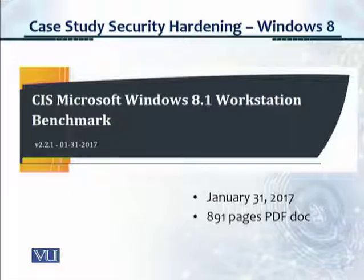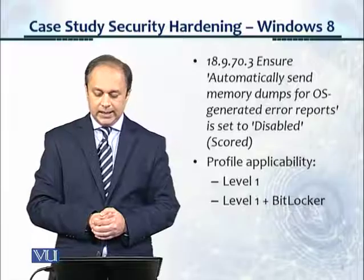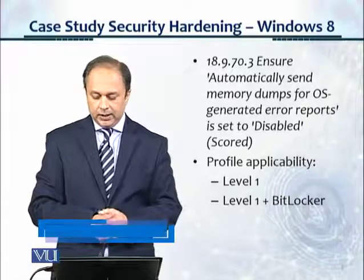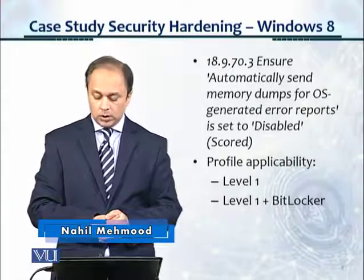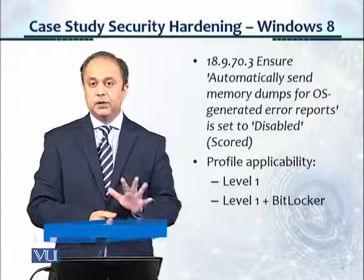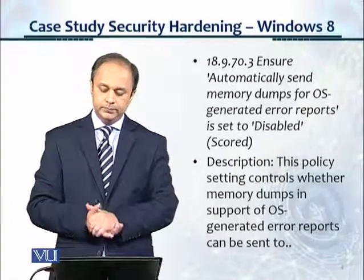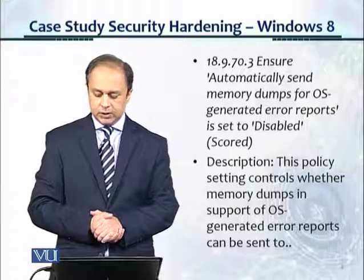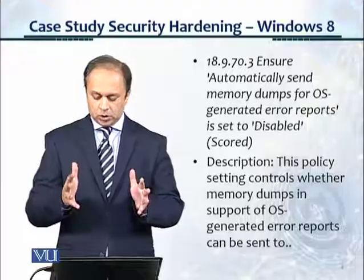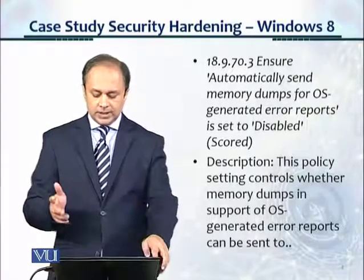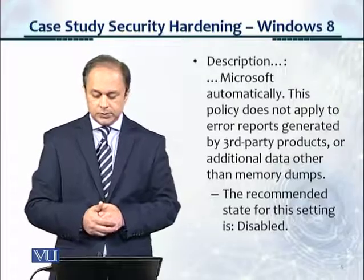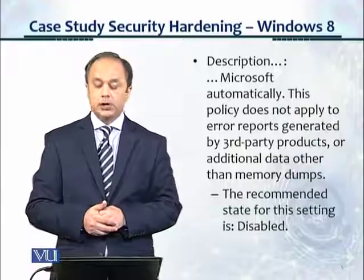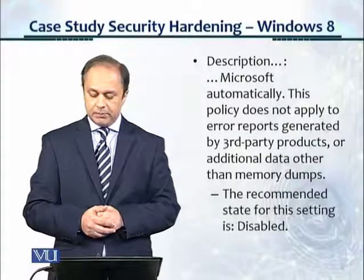This is the CIS Microsoft Windows 8.1 Workstation Benchmark, and the control selected is 18.9.70.3: 'Ensure automatically send memory dumps for OS-generated error reports is set to disabled' — and it is scored. The profile applicability is for Level 1. The description says this policy setting controls whether memory dumps in support of OS-generated error reports can be sent to Microsoft automatically. This policy does not apply to error reports generated by third-party products or additional data other than memory dumps.